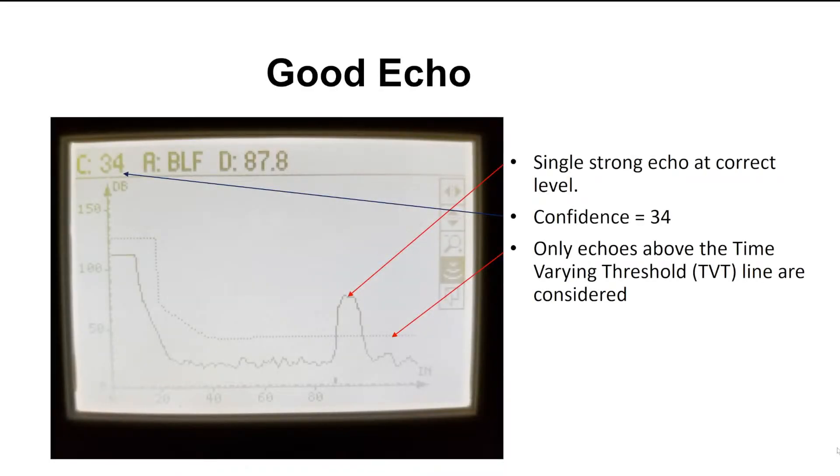In the first example here, I want to show an example of a good echo profile. First of all, what are we looking at? Well, in the upper left-hand corner, we show the confidence shown by C equals 34. Anything above 10 is acceptable, 25 is a really good number, and in this case, 34 is excellent.